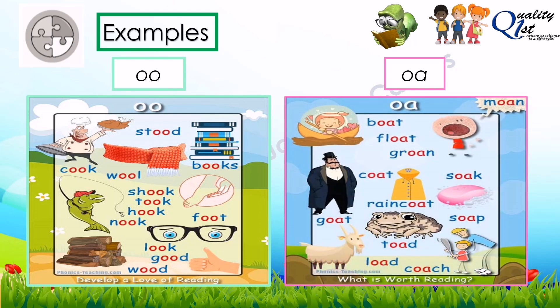Now for digraph OA, we have: boat, float, groan, coat, raincoat, soak, goat, toad, load, and coach.